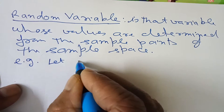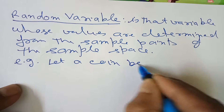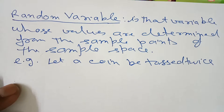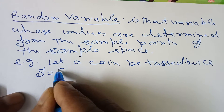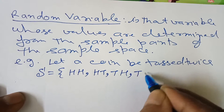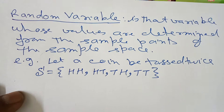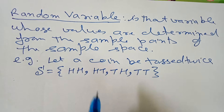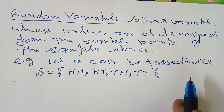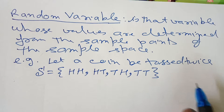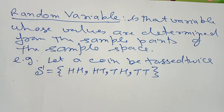Let a coin be tossed twice. The sample space contains four outcomes: head-head, head-tail, tail-head, tail-tail. This is the sample space containing four outcomes in two throws of one coin. You throw one coin twice or you throw two coins once — this is one and the same. The sample space is the same every time.